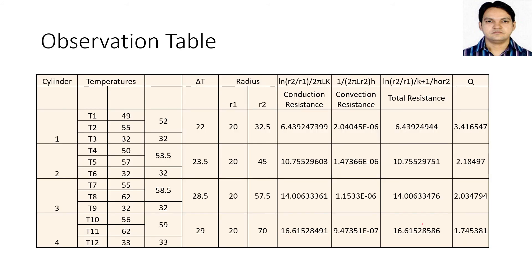For this particular data, readings were taken for four different cylinders where the inner radius of the heater is constant at 20 mm in all cases. The outer radius is increased: first cylinder 32.5 mm, second 45 mm, third 57.5 mm, and fourth 70 mm. As we increase the radius, you can see the conduction resistance increases: 6.4, 10.7, 14, and 16.